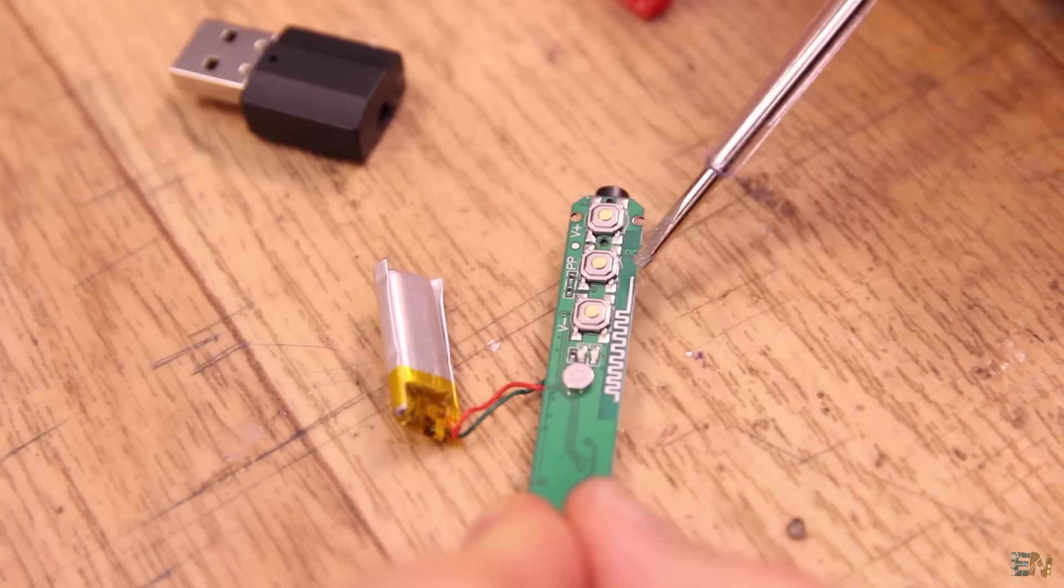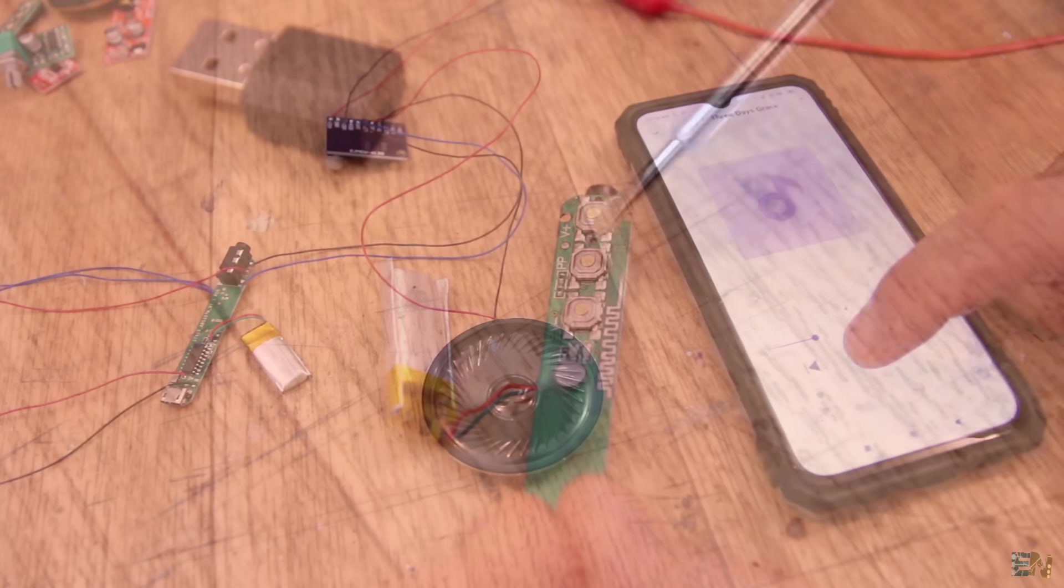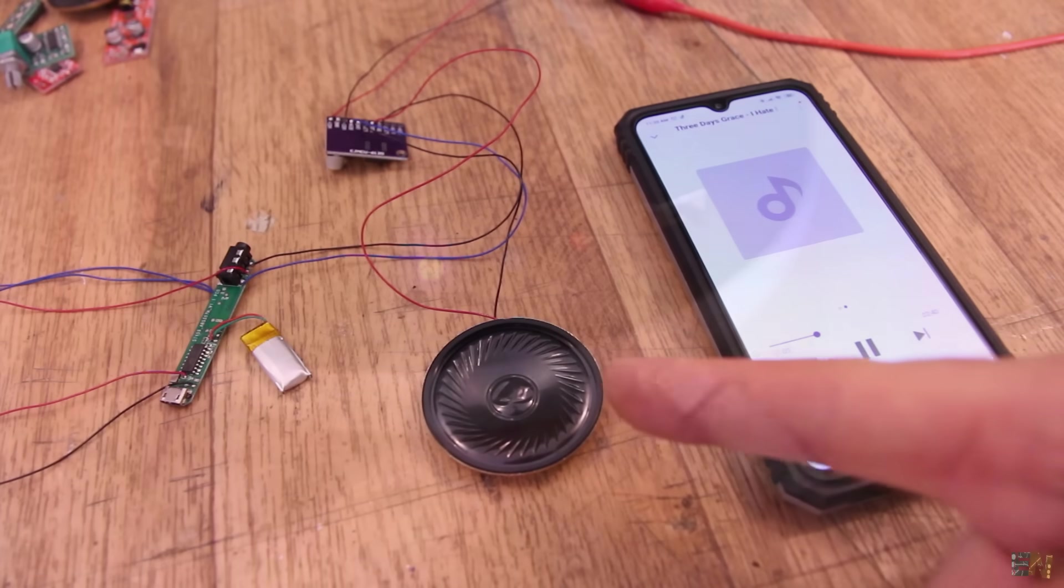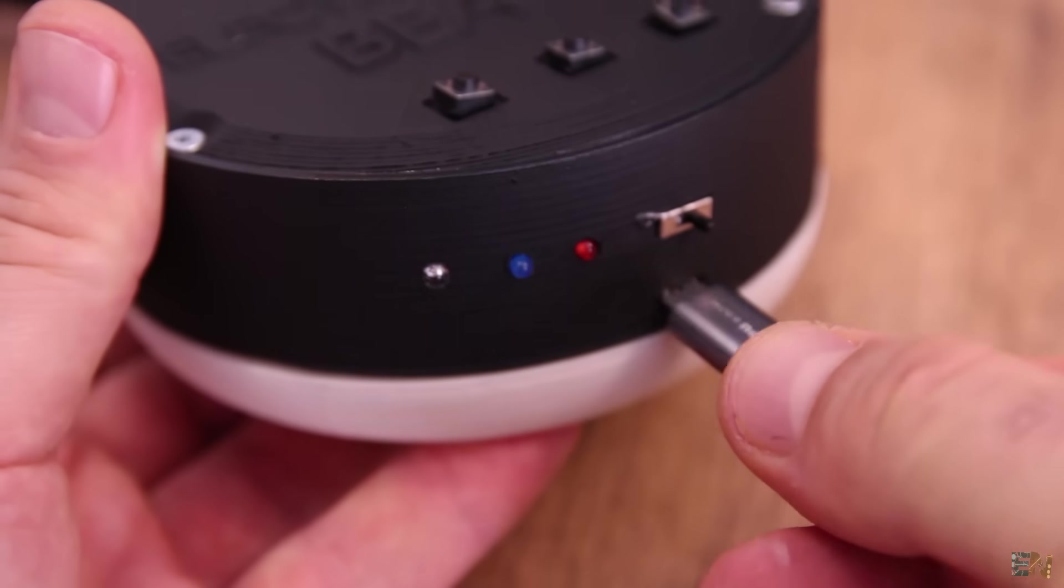The headphones will have a small Bluetooth audio receiver inside and an amplifier and 2 speakers. They will also have a USB input for charging the batteries.